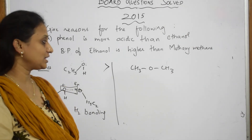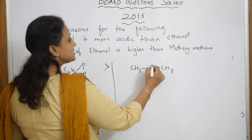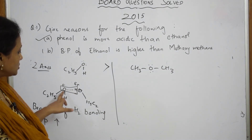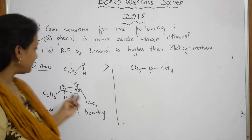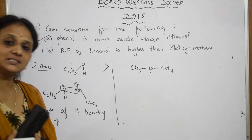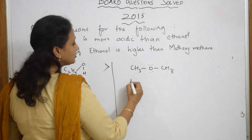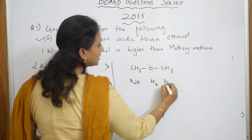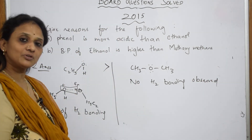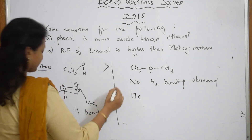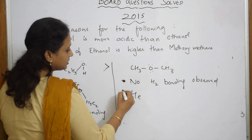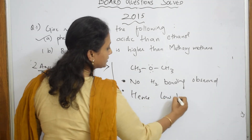Methoxymethane — will it show hydrogen bonding? It just has an ethereal oxygen. There is no oxygen–hydrogen linkage, because to form hydrogen bonding you need an electronegative oxygen atom as well as a hydrogen atom directly bonded to it, but here there is no such hydrogen. So, no hydrogen bonding is observed. If there is no hydrogen bonding, the bond can be broken easily, hence low boiling point.